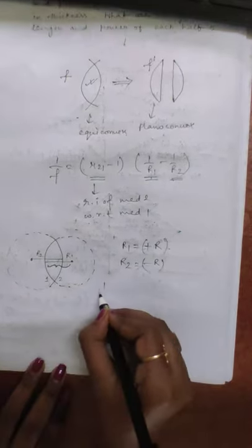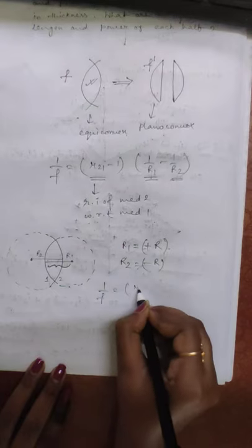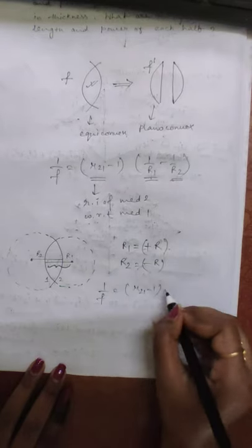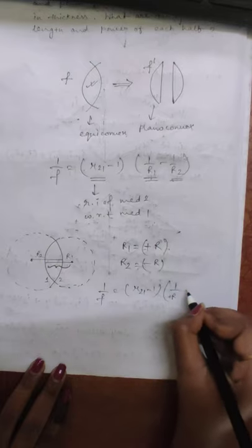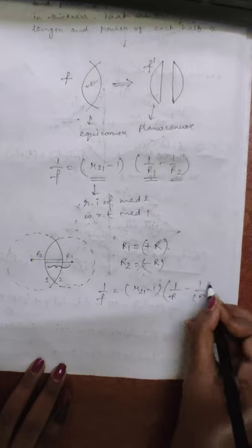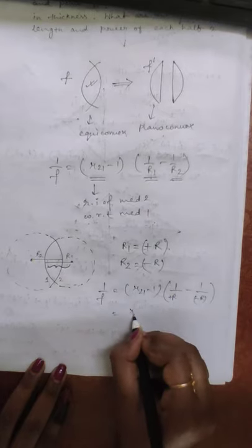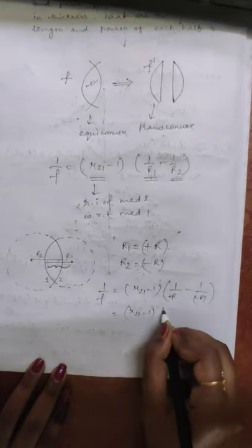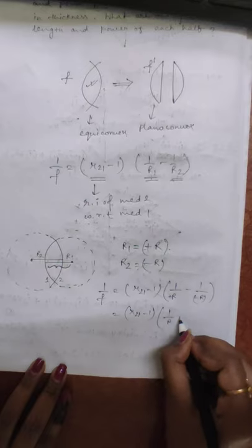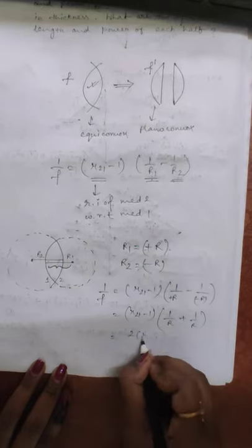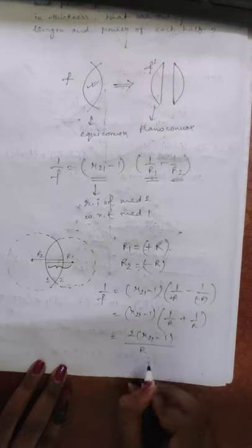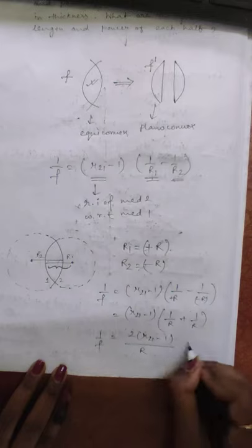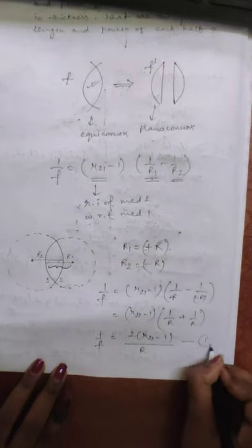That means 1/f = (μ₂₁ - 1)(1/r - 1/(-r)) = (μ₂₁ - 1)(1/r + 1/r) = 2(μ₂₁ - 1)/r. This is our equation number 1.